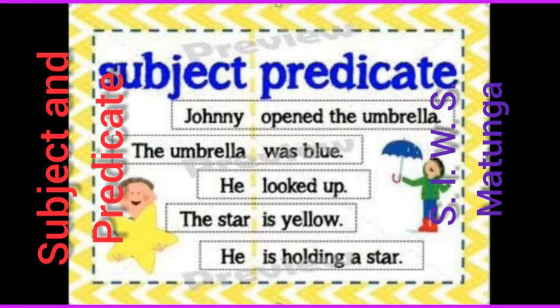The umbrella was blue. What was blue? The umbrella was blue. So, the umbrella is the subject. Was blue is the predicate.